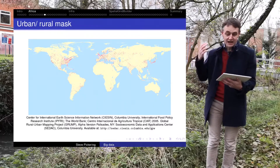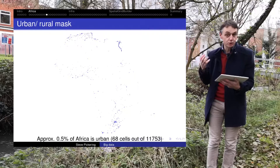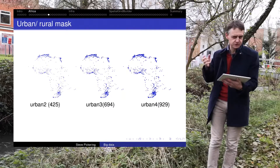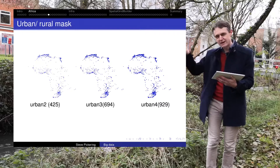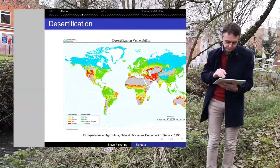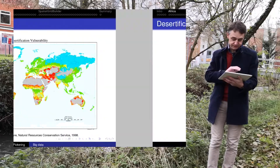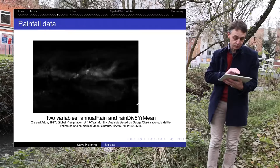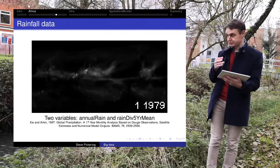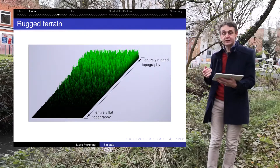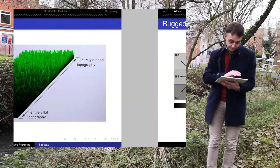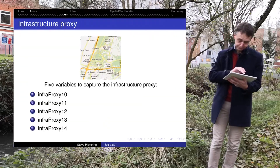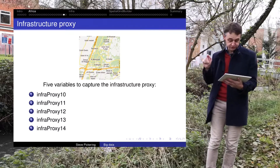For each cell we look at how urban or rural it is. In Africa there's not much urban territory as a percentage of the continent as a whole, so we expand our definition and come up with the notion of the peri-urban area — like a donut around the centre of a city. We include measures of desertification, gridded population data — not just state data, though we use that as a control too — rainfall data going back to 1979, the ruggedness of terrain, and the infrastructure proxy, which I'll explain how we constructed in a moment.